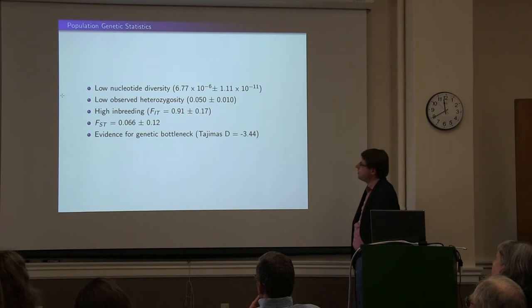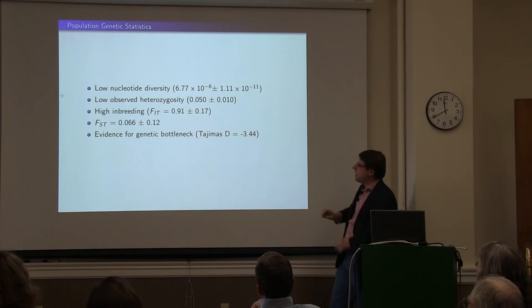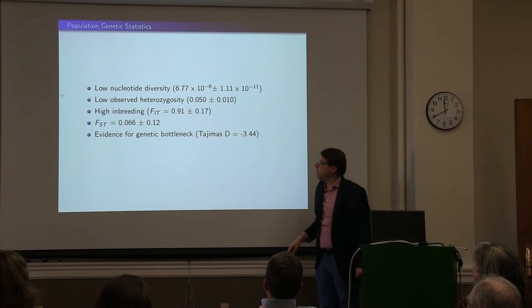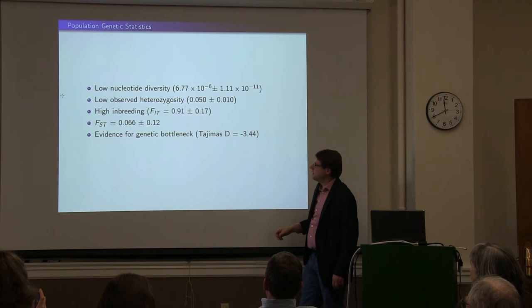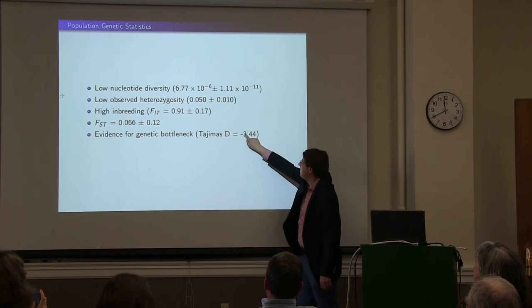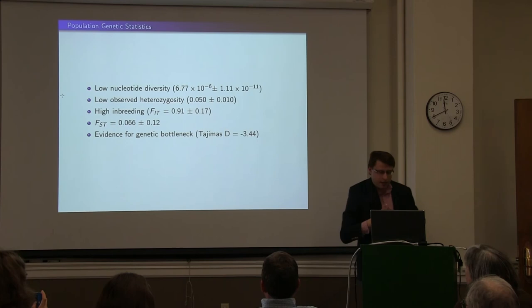In terms of genetic population genetic statistics: there is low nucleotide diversity and low observed heterozygosity. The inbreeding coefficient is also high. About 91% of the variation is found within individuals. There's not that much population differentiation between geographic populations, and there is evidence for a genetic bottleneck — Tajima's D is statistically negative, meaning there's an excess of rare alleles, indicating possible population expansion after a bottleneck.